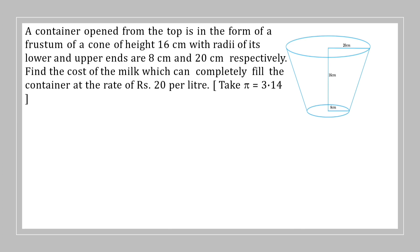Now let us substitute. Volume of the container equals 1 by 3 pi, we have to take it as 3.14, into height is 16 centimeter, into r1 square that is 8 square plus r2 square that is 20 square plus r1 into r2. Now let us simplify and multiply these two things.